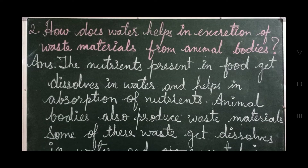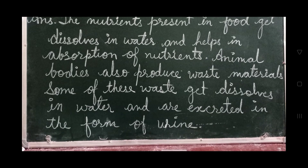Question number 2: How does water help in excretion of waste material from animal bodies? Answer: the nutrients present in food get dissolved in water and help in absorption of nutrients. Animal bodies also produce waste materials, and some of these wastes get dissolved in water and are excreted in the form of urine.